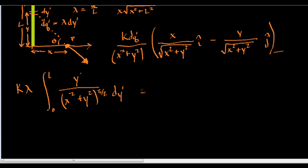Okay, this can be rewritten as k lambda. And we'll move the denominator upstairs by setting the exponent to negative. So we get y prime times x squared plus y prime squared to the negative 3 halves dy.